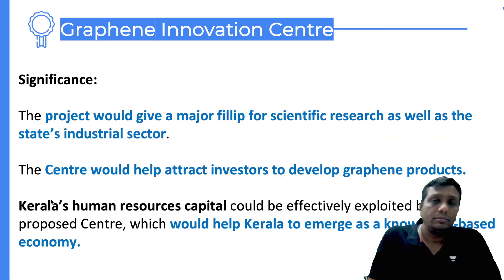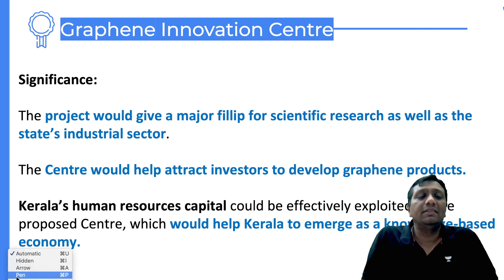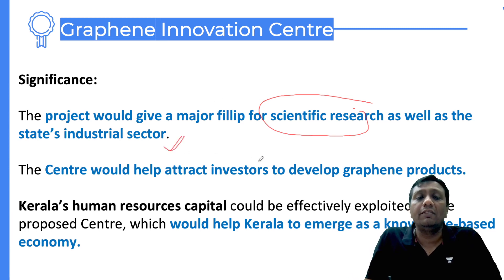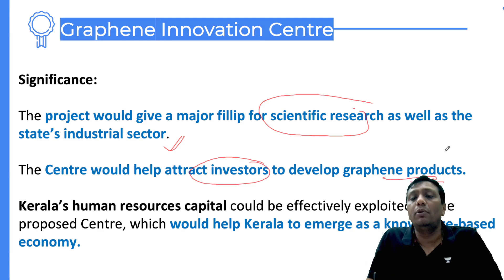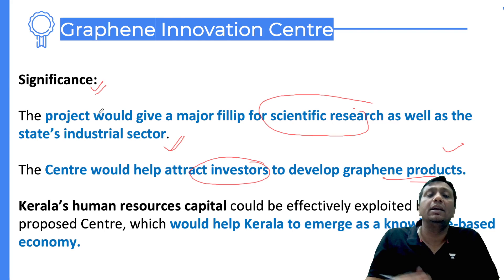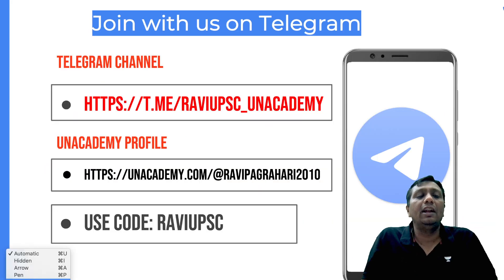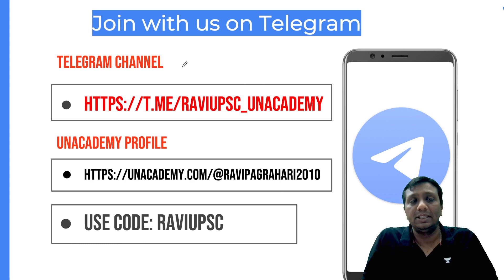The significance of this graphene innovation center project is that it will boost the state industrial sectors and attract a lot of investors to develop graphene products in their own states. Ultimately in India, graphene will have more and more scope and people will use it. Graphene has an endless future. I'll suggest to all of you that graphene is the most important topic for the coming examinations.